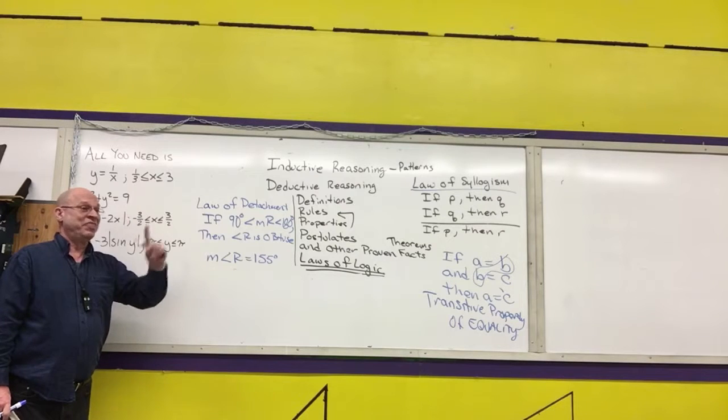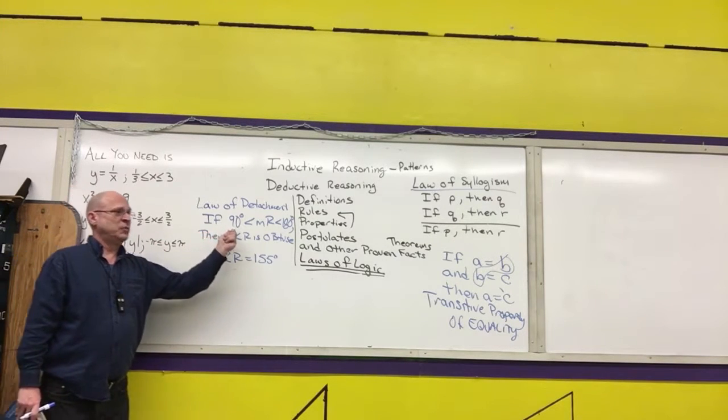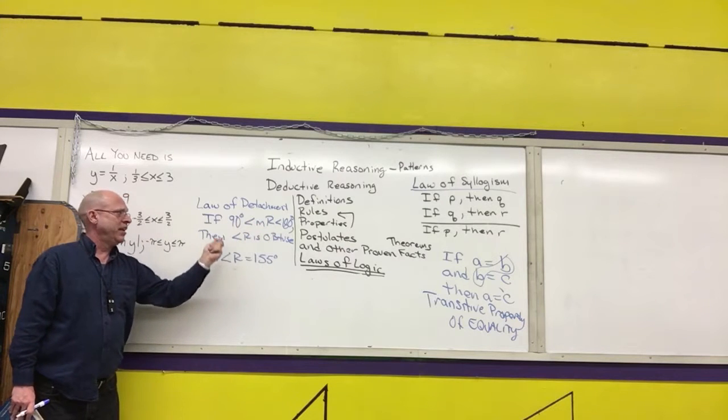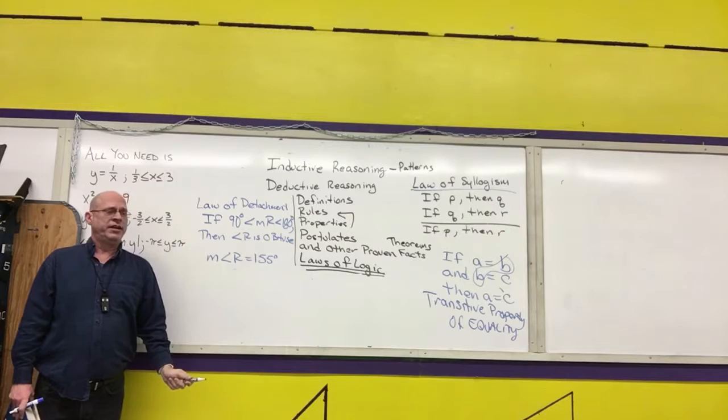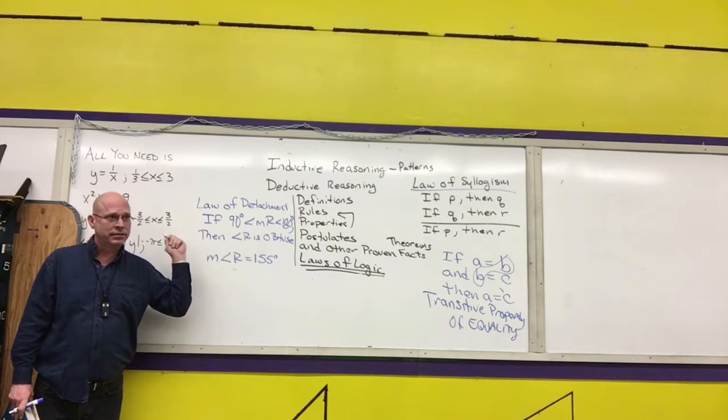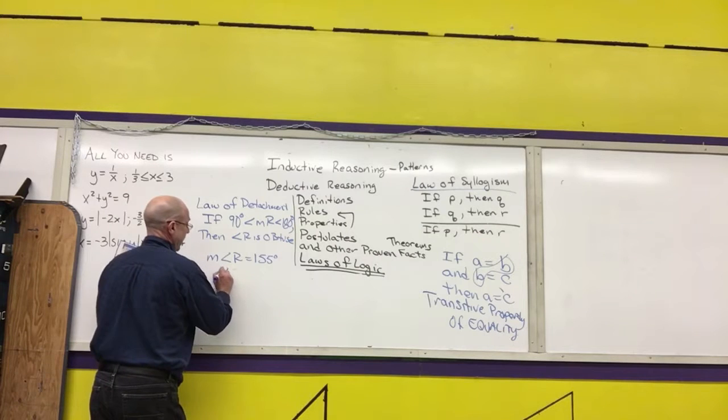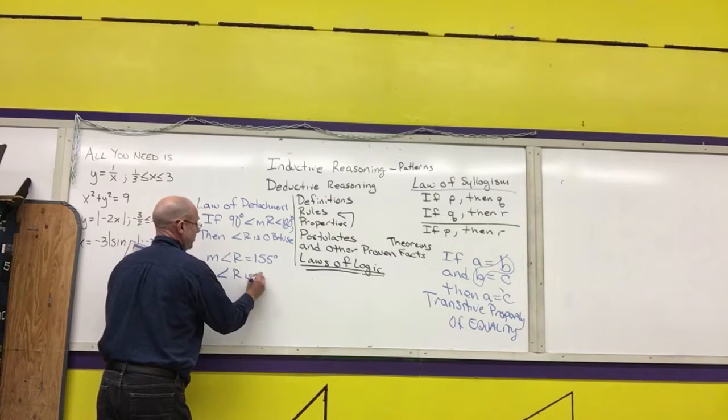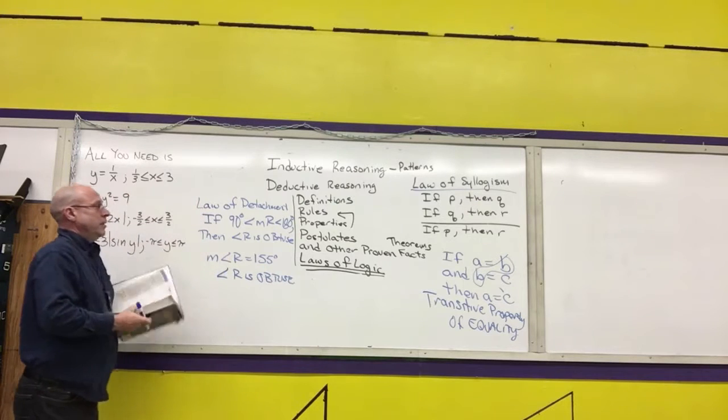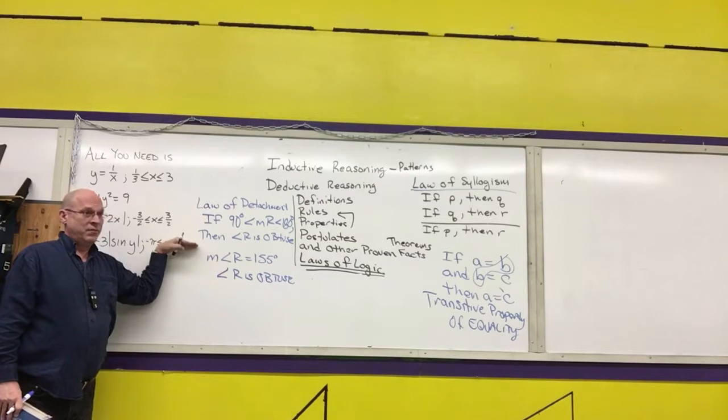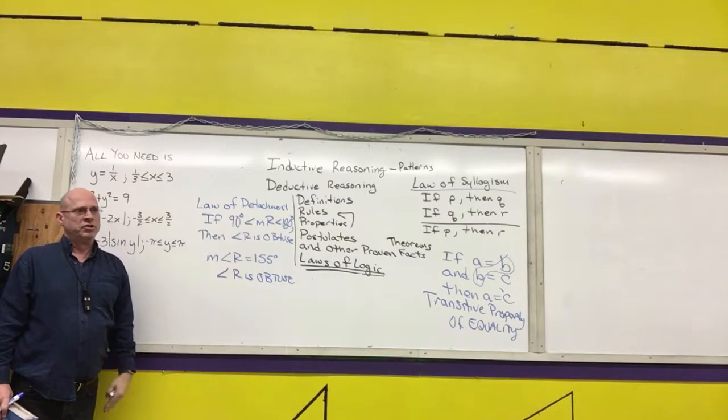I just need to say one thing. You're overthinking it. If the measure is between 90 and 180, then the angle is obtuse. The angle is 155 degrees. Therefore, R is obtuse. That's all you have to say. Angle R is obtuse. So if you have an if-then statement and the hypothesis is true, you can just write down that the conclusion is true.